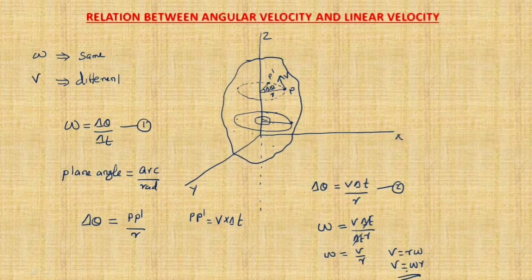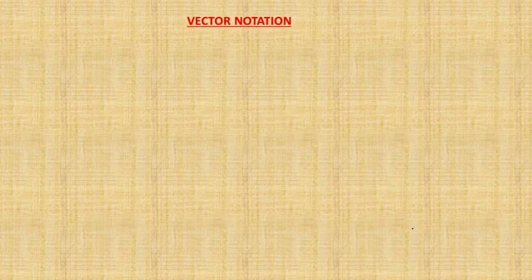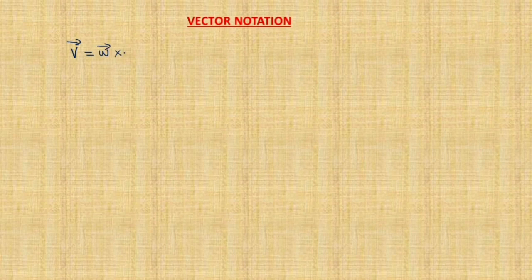This equation represents only the magnitude. So how can we represent it in vector notation? We can write the equation in vector notation as V vector equals omega vector cross r vector.